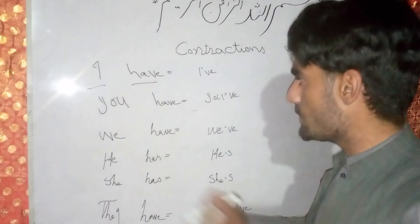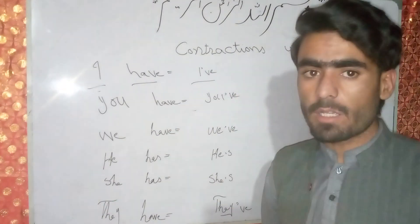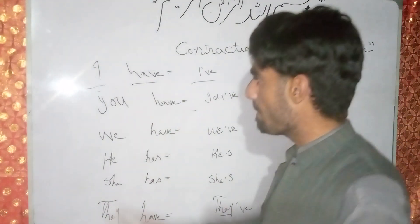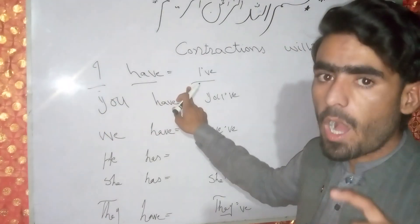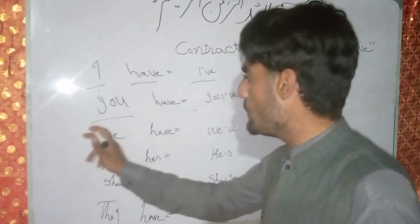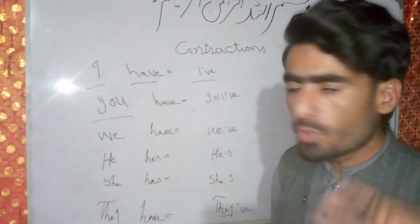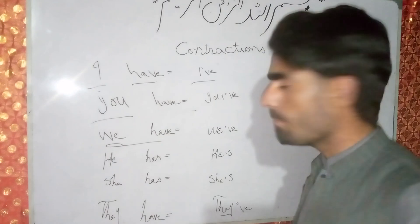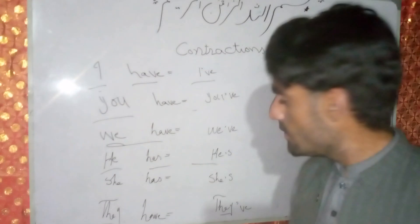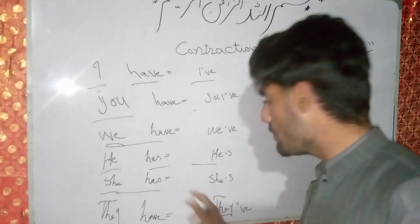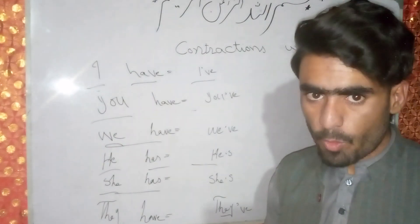First, 'I have' — we combine it into 'I've.' Then 'you have' becomes 'you've.' 'We have' becomes 'we've.' 'He has' becomes 'he's.' 'She has' becomes 'she's.' And 'they have' becomes 'they've.'